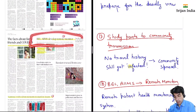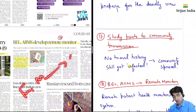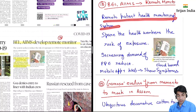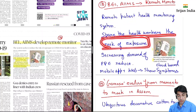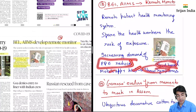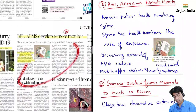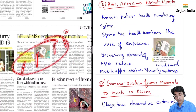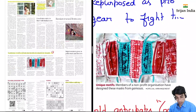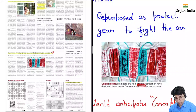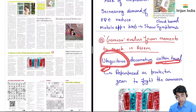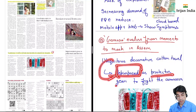BEL aims to develop remote monitor — yeh jo frontline medical staff hai yeh contact mein aate hain aur inki life bhi risk hoti hai. Remote patient health monitoring se jo health workers spare ho jaayenge aur risk of exposure kam hogi, PPE — personal protection equipment — ka demand bhi kam ho jaayega. Mobile aur web se hum symptoms show aur cloud-based monitoring kar sakte hain — cloud based monitoring matlab internet pe data save hai jo aap kaheen se bhi access kar sakte ho. Gamosa — yeh decorative cotton towel hota hai jo Assam mein istemaal karte hain — isko repurposed kar liya gaya hai as a protective gear to fight the coronavirus.